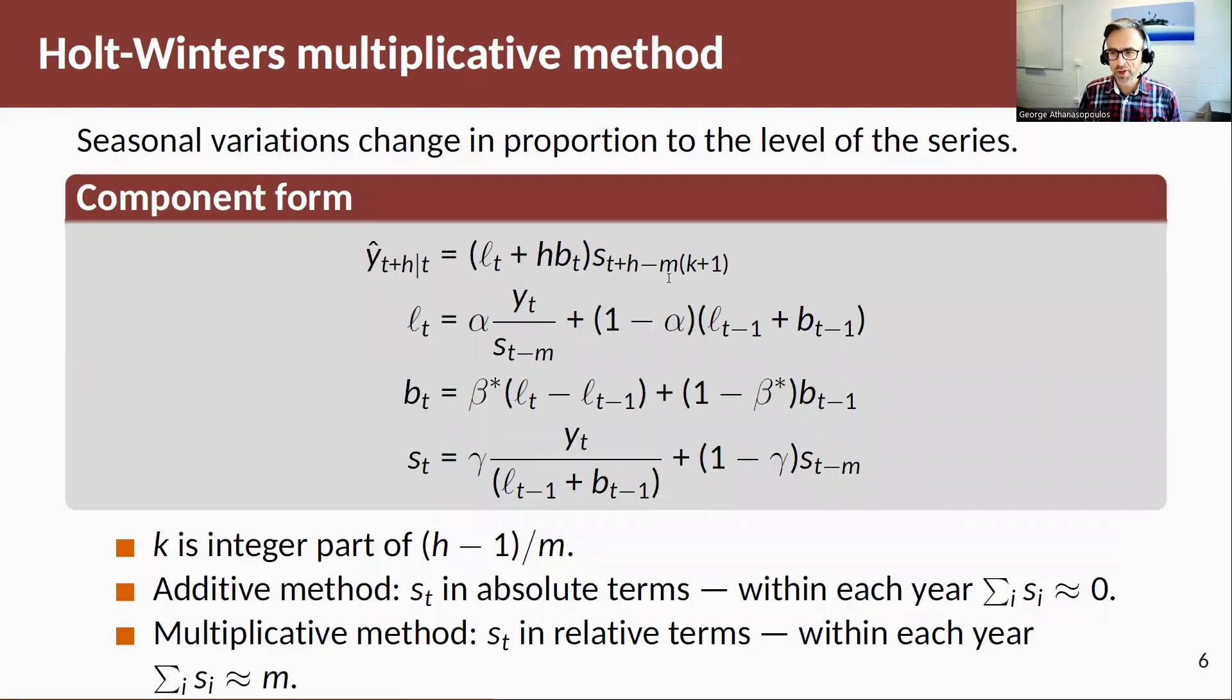Now, an alternative to the Holt-Winters additive method is where we have our level and our trend interacting with a seasonal component in a multiplicative way. Hence now a seasonal component instead of de-seasonalizing by subtracting the seasonal component, we divide through the seasonal component. Here, when we detrend our data, instead of subtracting the trend and the level, we are dividing through so it can leave us a multiplicative seasonal component.